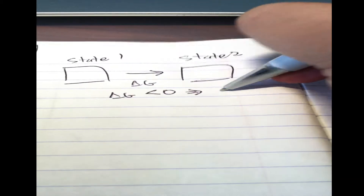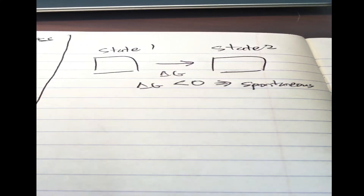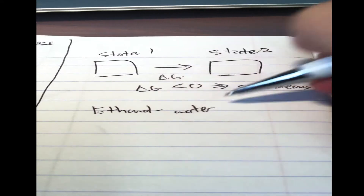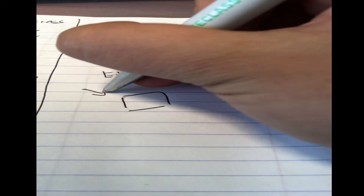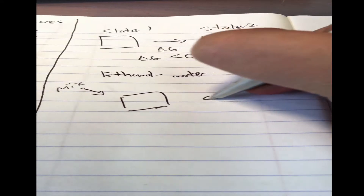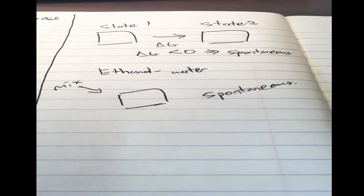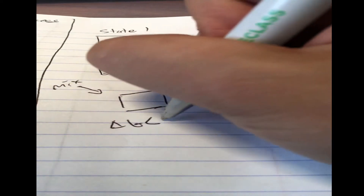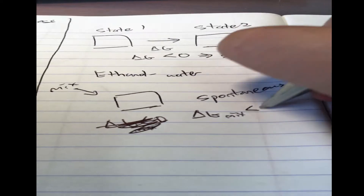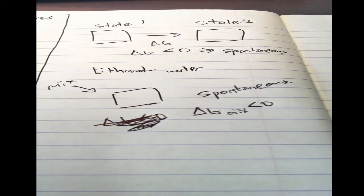Let's recap and break it down. If you have a change from state 1 to state 2, and your delta G is less than zero, this means it's spontaneous. So as you can see, when many solutions mix — let's say ethanol and water — you have pure ethanol, pure water, and you mix them. We see it's spontaneous. Most mixtures when you mix two fluids, there will be spontaneous mixing. So you can infer that the delta G of mixing is less than zero since the process itself is spontaneous.